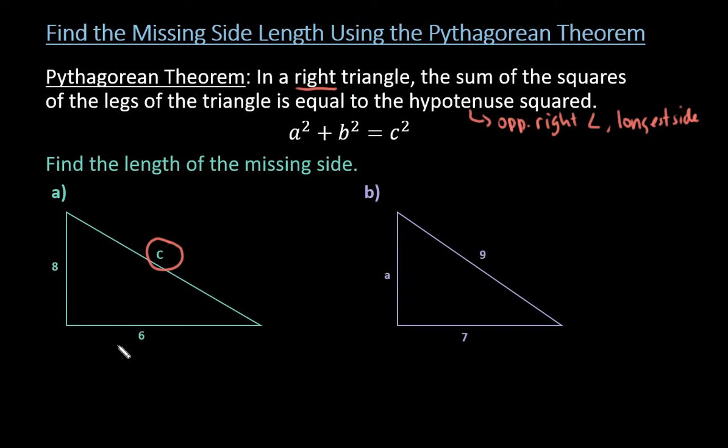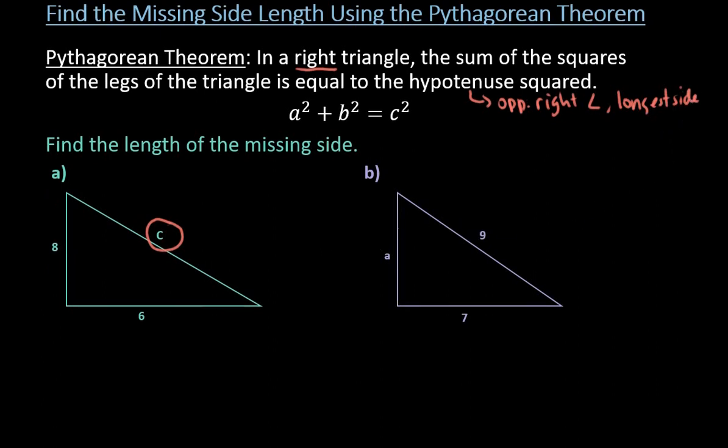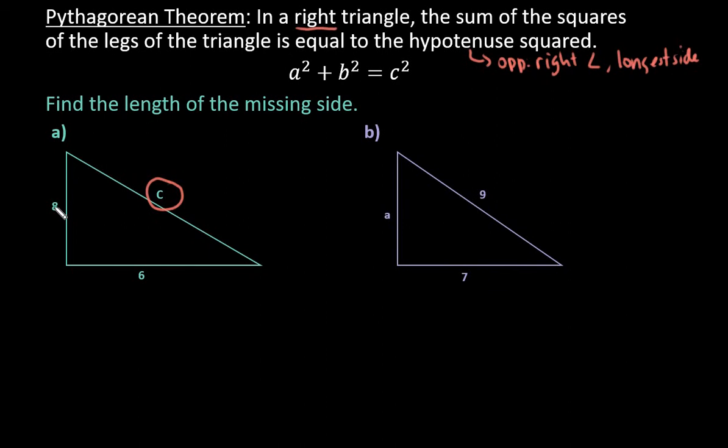It doesn't matter which one you pick as A and B because 8 squared plus 6 squared is the same thing as 6 squared plus 8 squared. The commutative property does apply there, it doesn't matter what order. So you can pick either one to be A and either one to be B. I would just set it up as a squared plus b squared equals c squared.